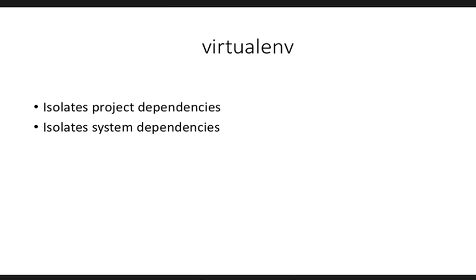This is extremely important to understand, and one of the reasons why you should never ever sudo pip install anything. Most operating systems ship with Python, and a lot of what these systems require to bootstrap is a functioning Python interpreter. They ship with their own versions of libraries they actually need. So if those libraries get overwritten, your operating system might not work as intended. When you sudo pip install, like I was doing in 2012 and 2013, you are potentially breaking your operating system. Never do that — always use virtualenv.